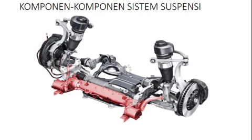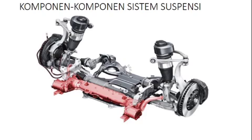Kemudian yang berikutnya adalah komponen-komponen sistem suspensi. Kalau kalian perhatikan pada gambar, salah satunya ada shock absorber, kemudian ada pegas coil, kemudian ada lower arm, ada upper arm, kemudian ada ball joint, dan lain sebagainya. Komponen-komponen sistem suspensi kurang lebih ada 10 bagian.